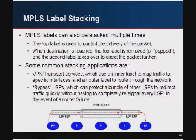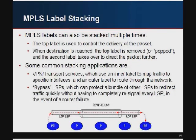MPLS labels can be stacked multiple times. The top label steers the packet at any given moment, and you can add new labels on top — taking an existing MPLS packet and sticking it inside another MPLS header. When you reach the destination for the top label it gets popped, and if there's another label underneath you continue forwarding. Common applications include VPN or transport services, where the inner label maps to a specific customer transport instance out to an interface, and the outer label handles routing through your network. This is also used in bypass LSPs to protect a bundle of other LSPs without re-signaling them.